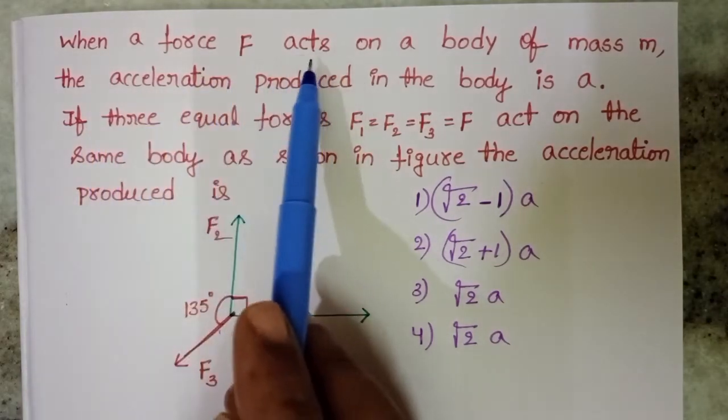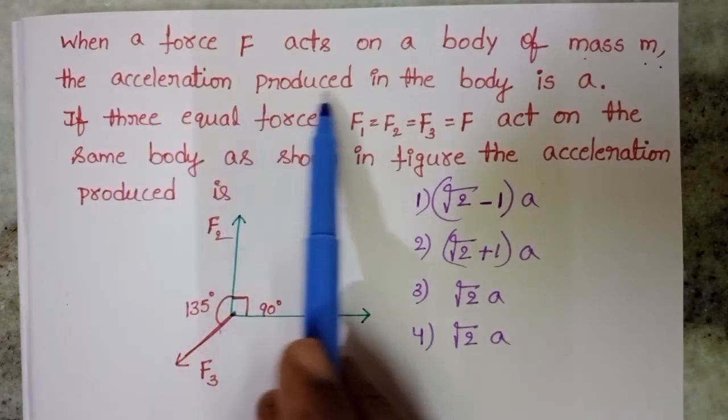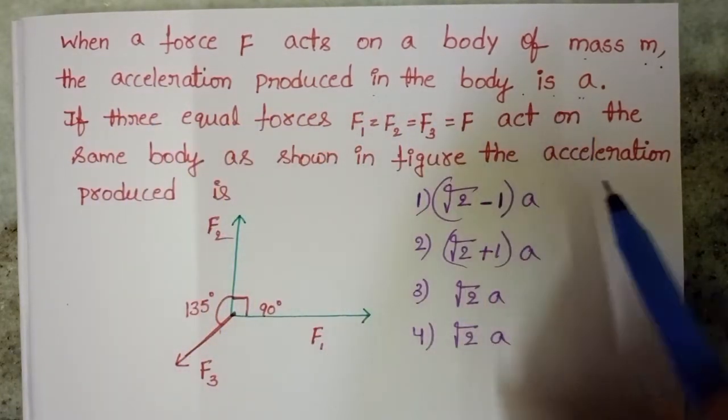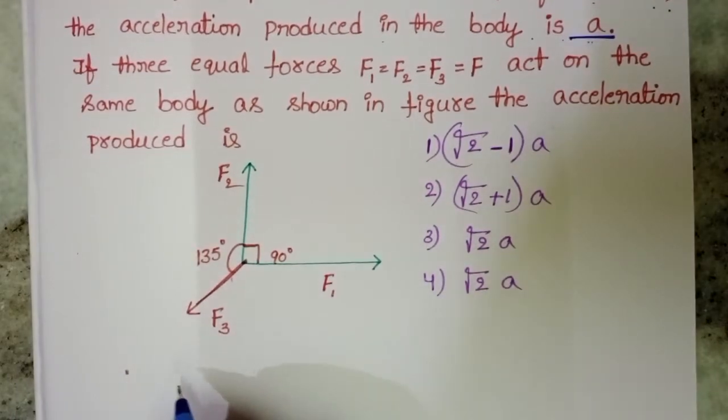When a force F acts on a body of mass M, the acceleration produced in the body is A. So initially, F force is acting on a body.